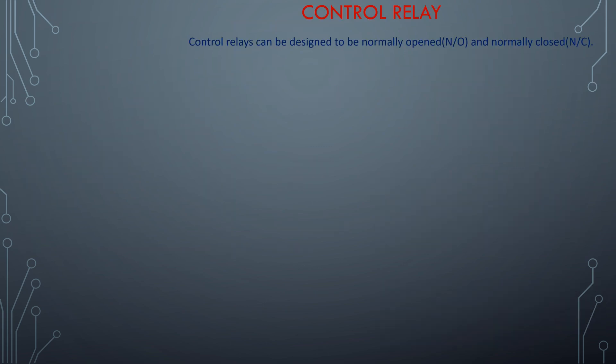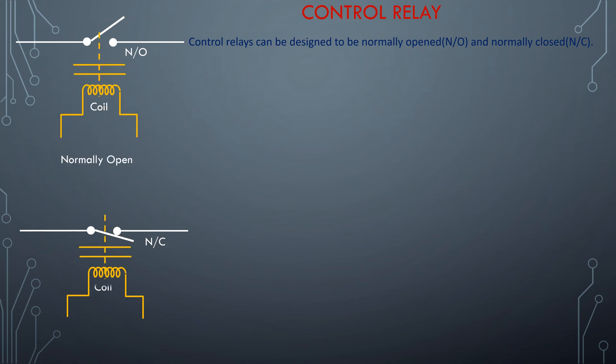Control relays can be designed to be normally open (NO) and normally closed (NC). A coil of wire wrapped around a laminated core provides the magnetic field necessary to actuate the switch mechanism, energized by either AC or DC voltage. This electromagnet coil's actuating influence on the relay contact is represented by dotted lines. A single pole, single throw relay with normally closed (NC) and normally open (NO) switch contacts is represented here.